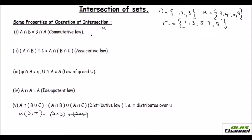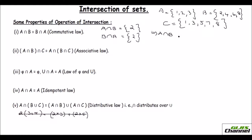Intersection means we just take the common term between the sets. In union we take all the terms without any repetition, but in intersection we just take the common ones. Now we are doing A intersection B — only 2 is common in A as well as B. Now B intersection A — the common value is also 2 only. So A intersection B equals B intersection A, and the commutative law is proved.